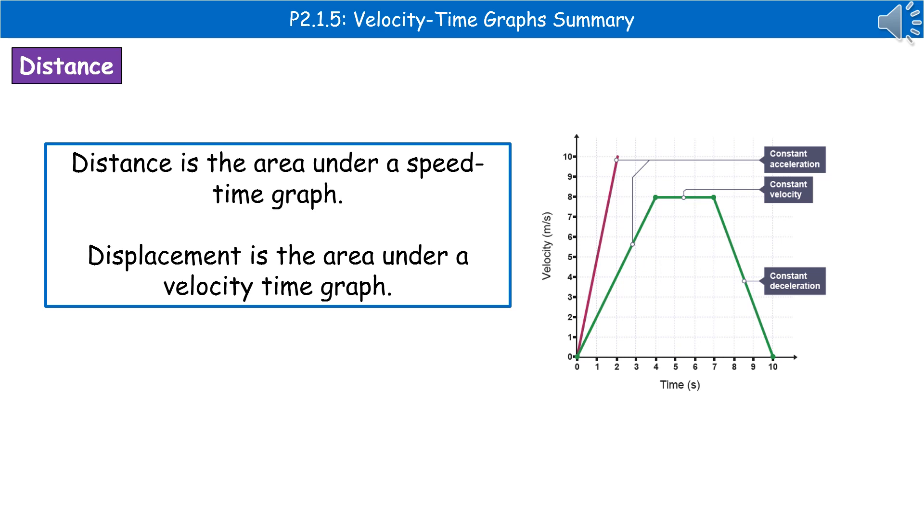The next thing we need to know is what else we can calculate from these graphs. If it's a speed-time graph, the area underneath the line represents the distance traveled. If it's a velocity-time graph, the area under the line represents the displacement.